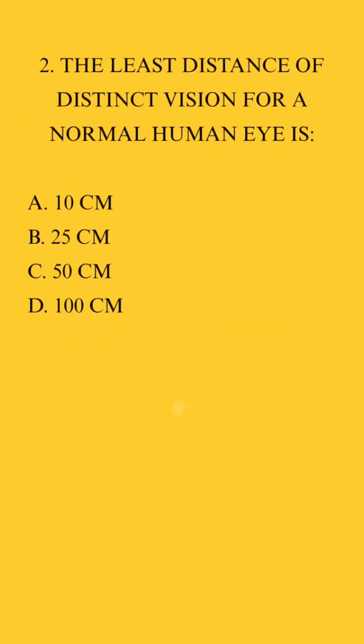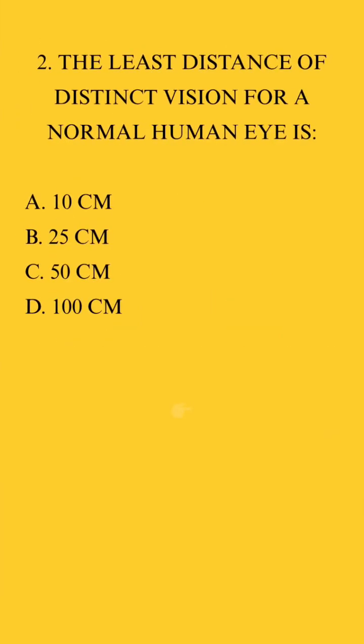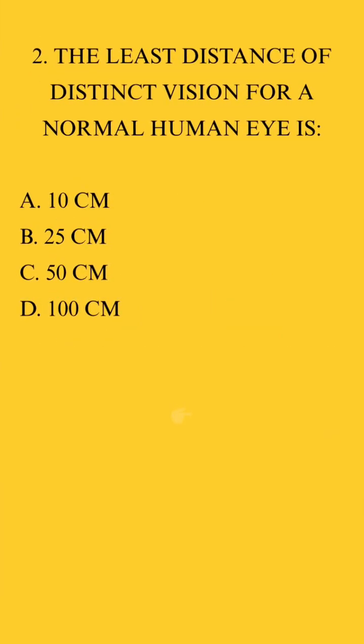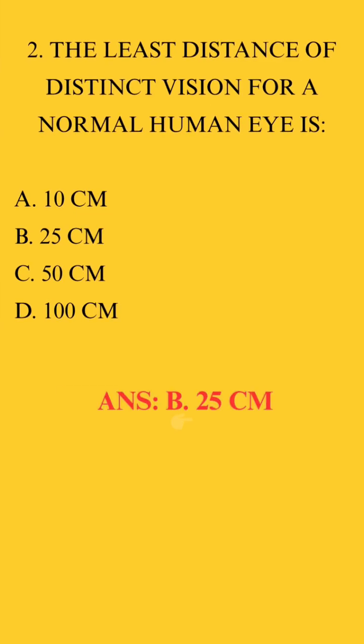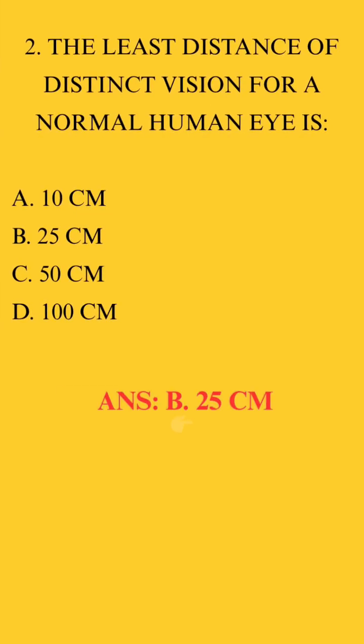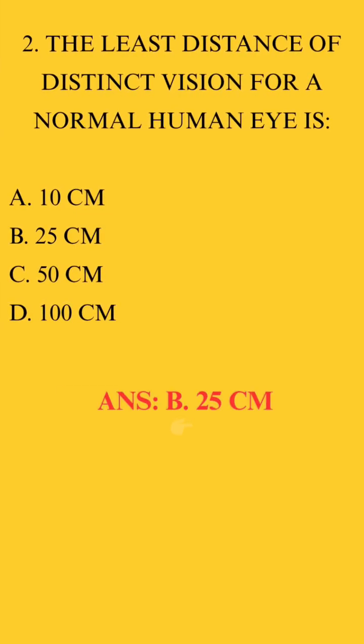2. The least distance of distinct vision for a normal human eye is. Answer: b. 25 cm.